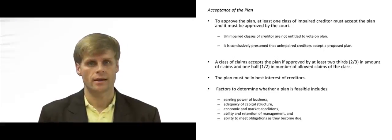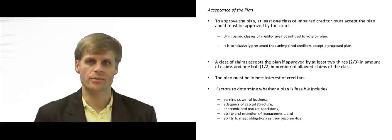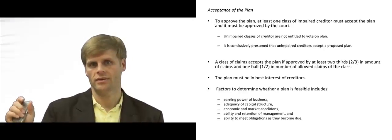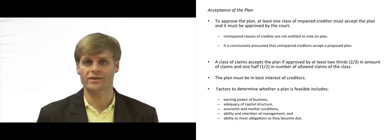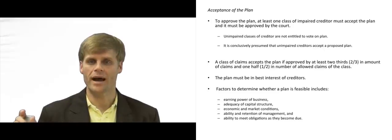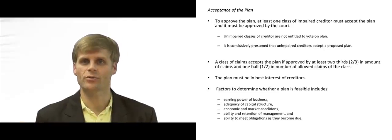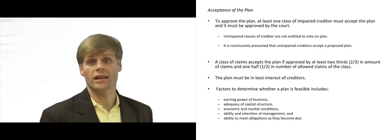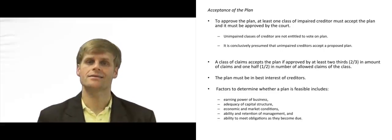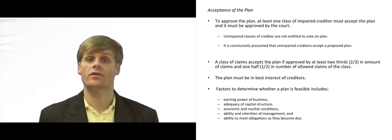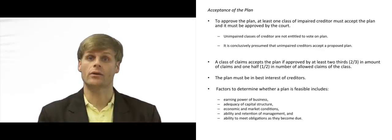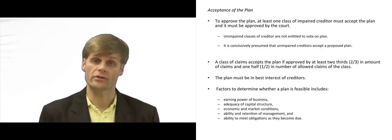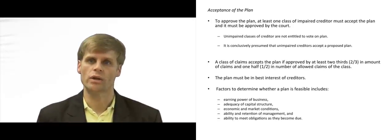Lots of times with fancy reorganization of the plan, they can put a minor class of impaired unsecured creditors that will approve the plan when many other classes reject it. This is effectively called a cram down — when they're forcing the plan down on a group of creditors who otherwise would not approve of the plan.